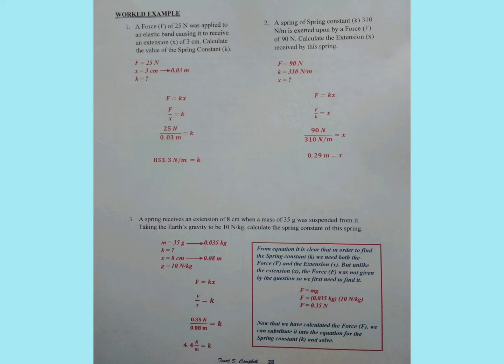That is, 25 Newtons divided by 0.03 meters. In essence, the answer for K becomes 833.3 Newtons per meter.